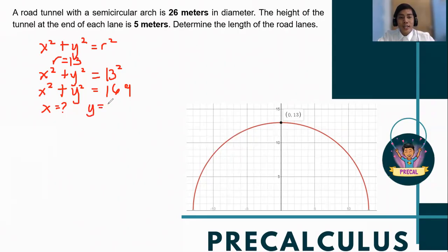We transpose 5 squared on the other side. So that is 169 minus 25. Therefore, x² = 144, so x = 12 meters.